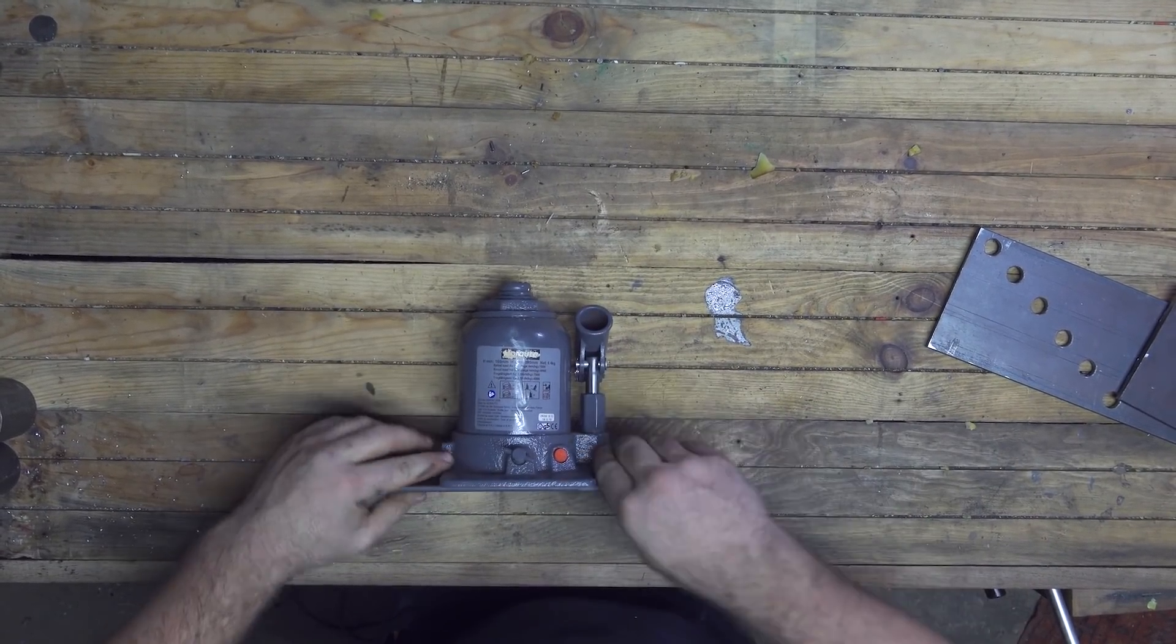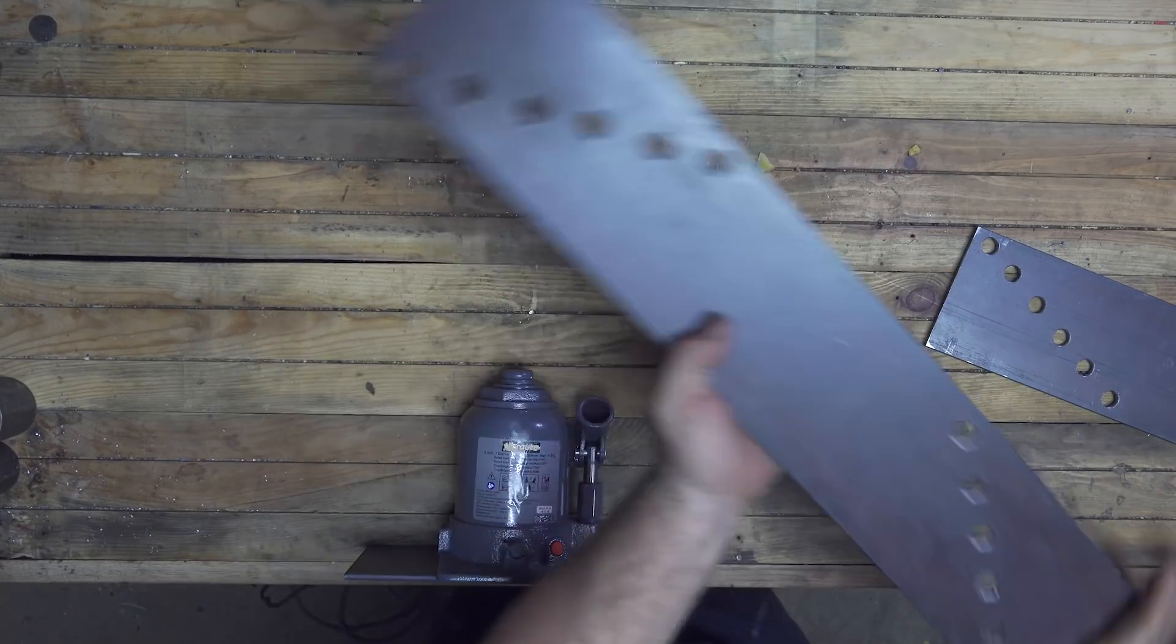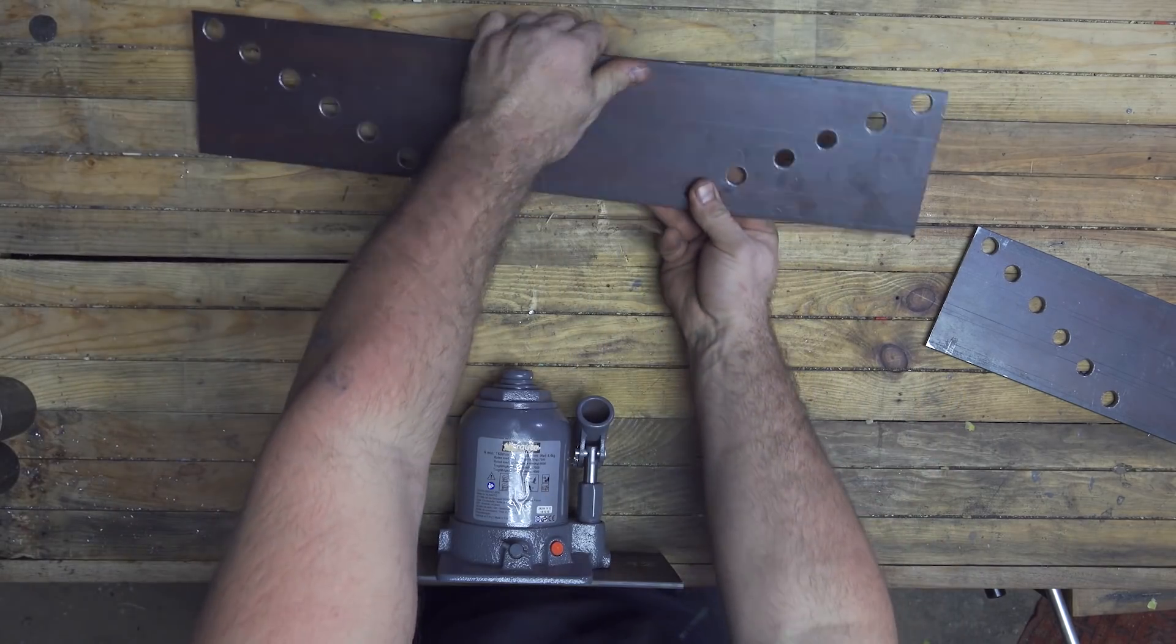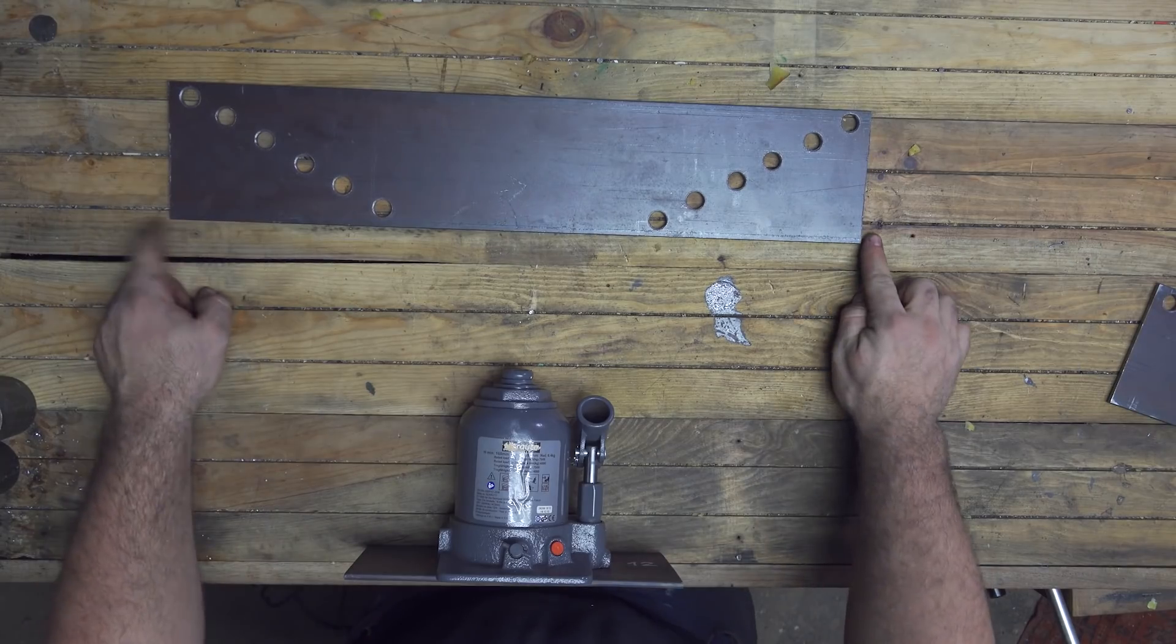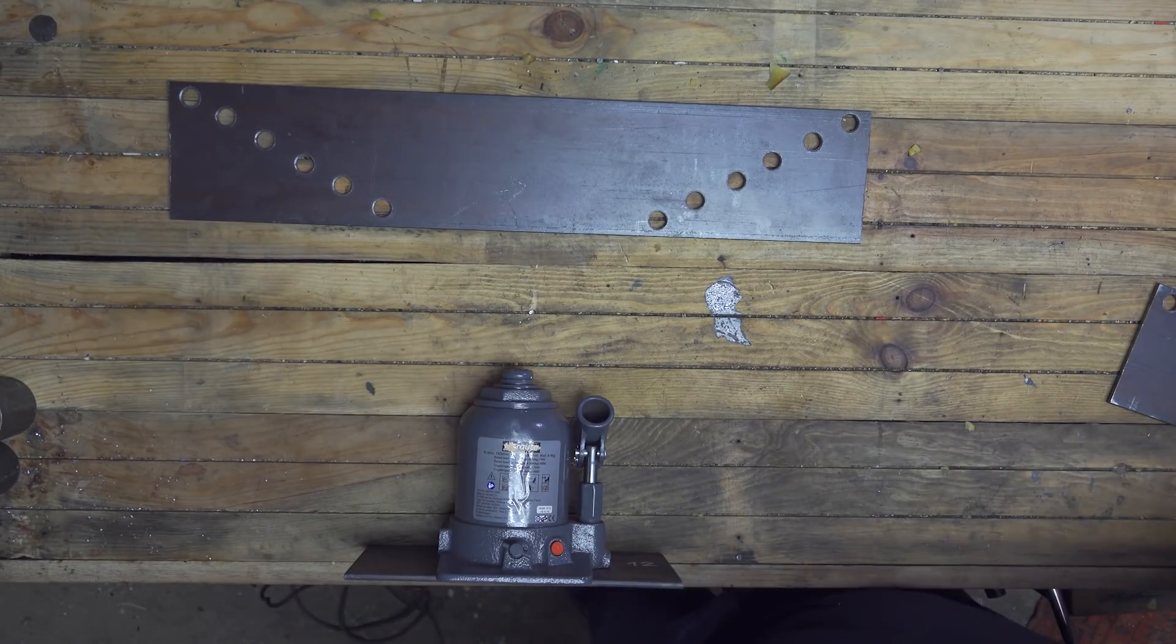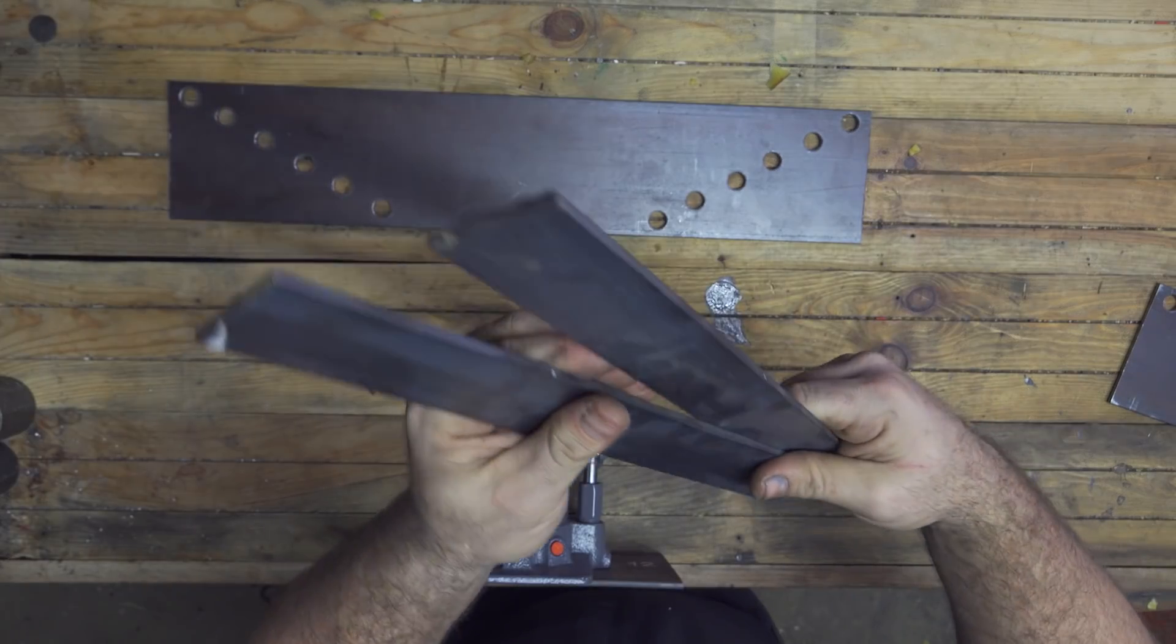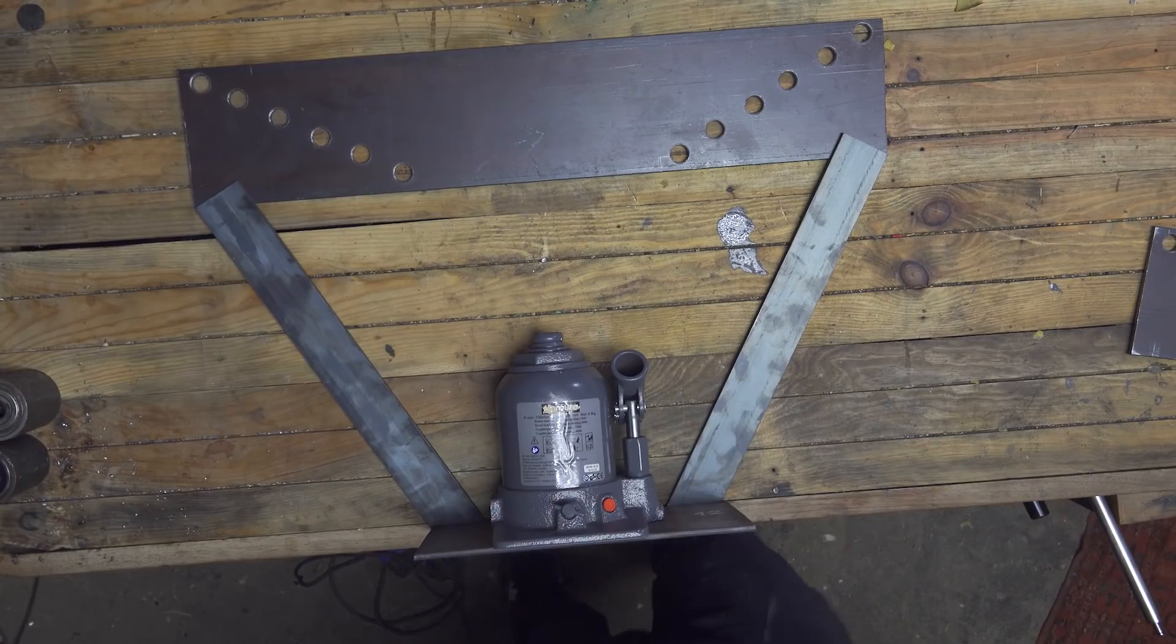The smaller plate will be the base for a jack. This is a 14 ton jack - I know it's not that much, but I'm making it high so I can replace the jack with a stronger one if needed. Two brackets, five millimeters thick, will hold together the base to the longer metal plate.